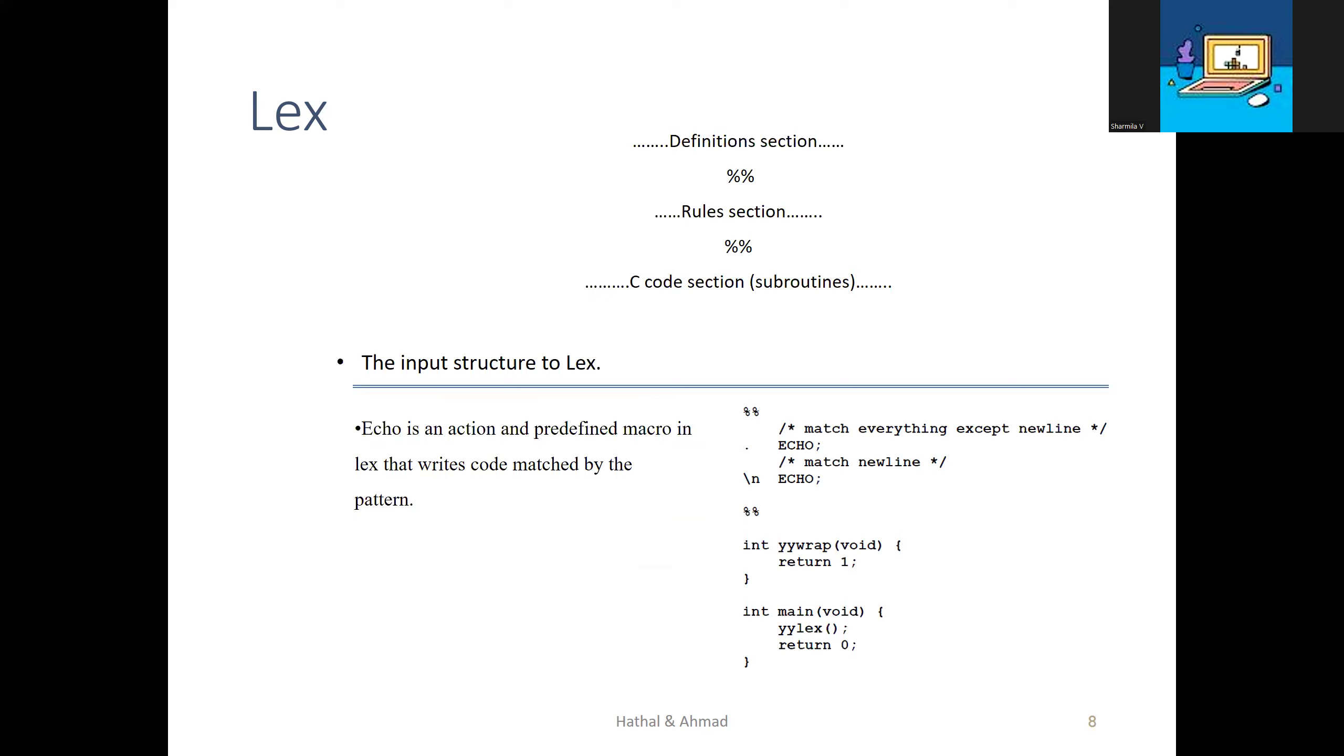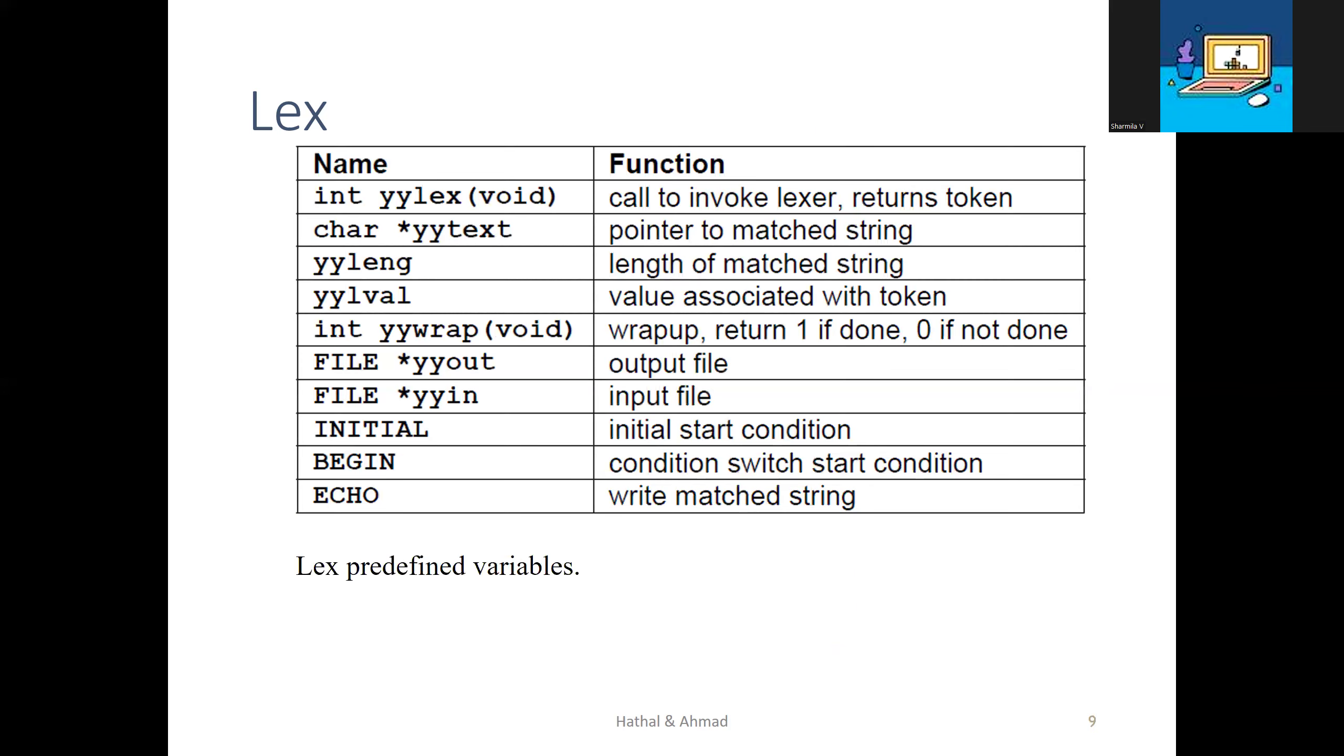There are three sections to write Lex: first is the definition section, second is the rule section, and third is the subroutine section. The input structure of Lex has definitions, rule section, and C code. Echo is a predefined macro in Lex that writes code matched by the pattern.